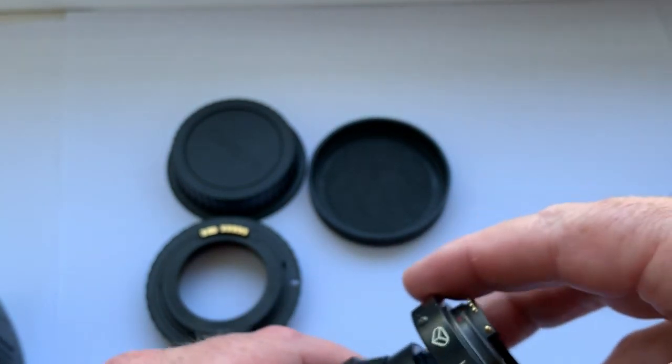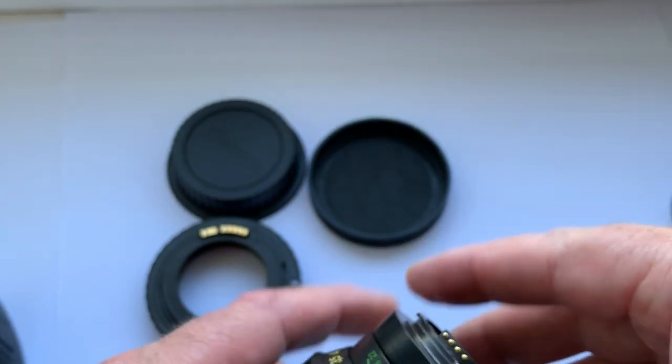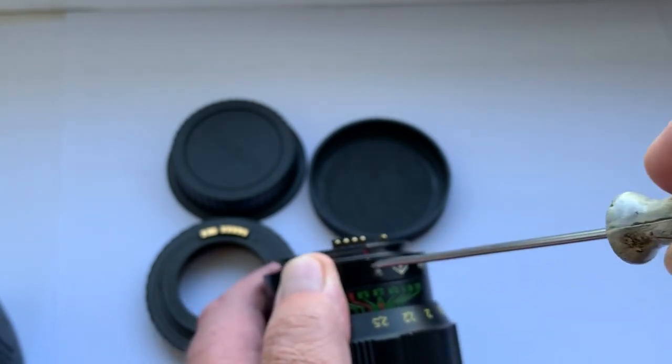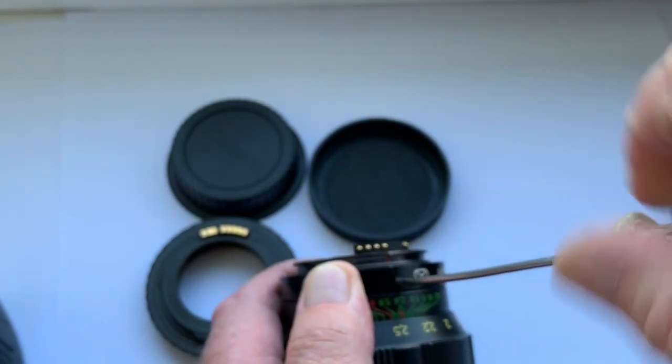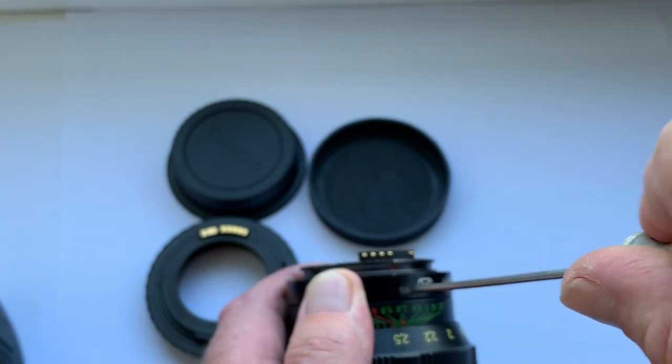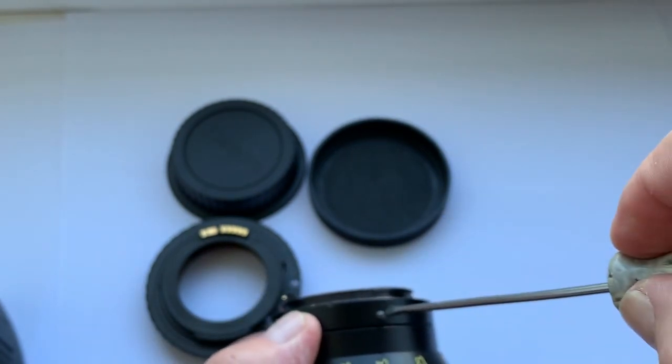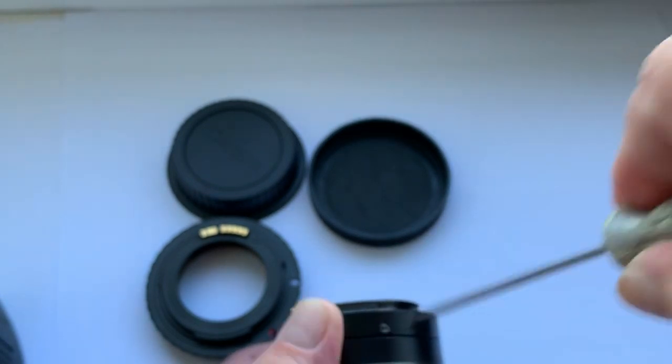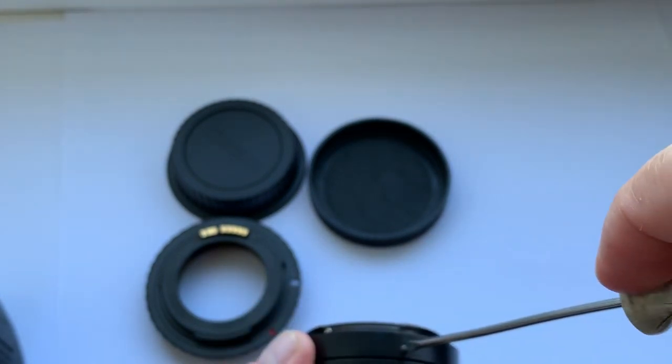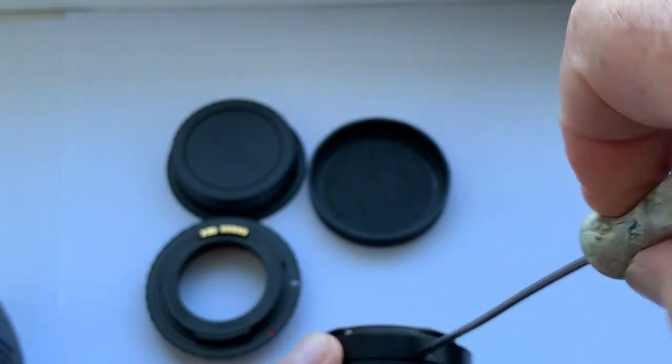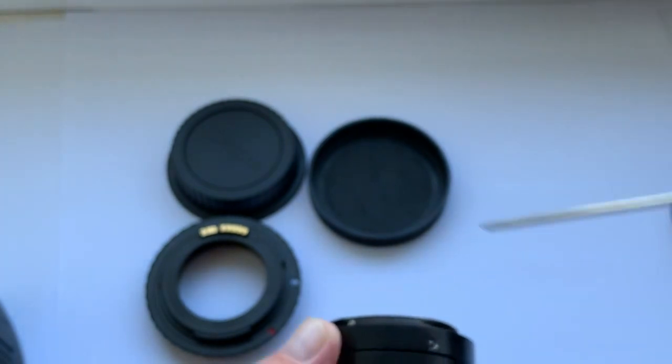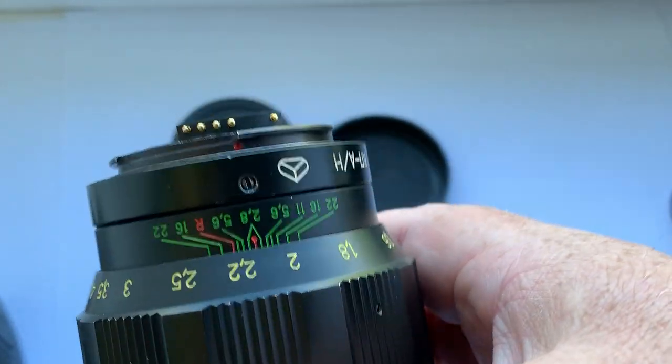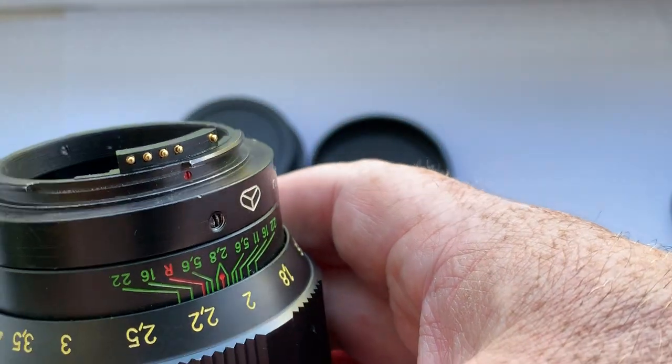And a bayonet for Nikon F with programmable dandelion chip, original. This is an original bayonet for this lens with interchangeable replacement. This is the dandelion chip.